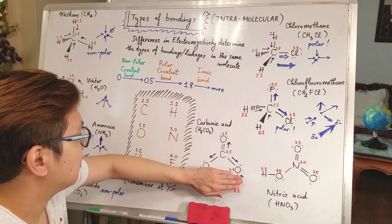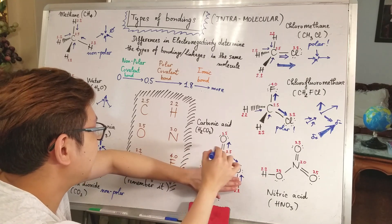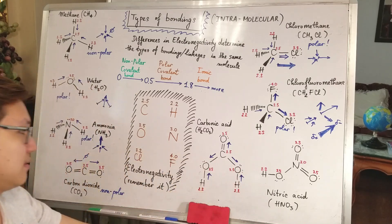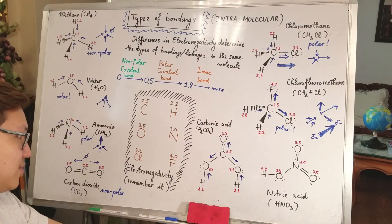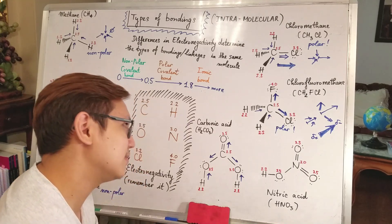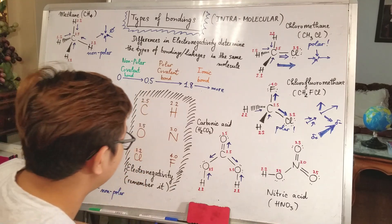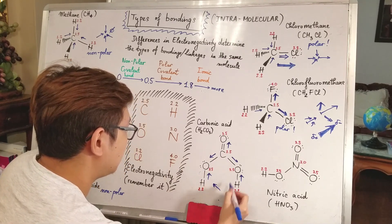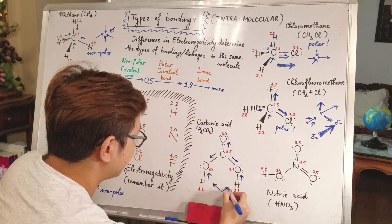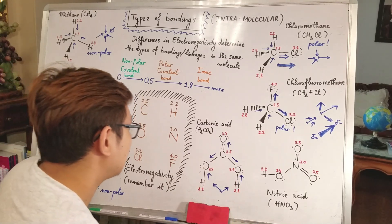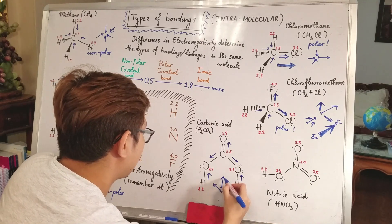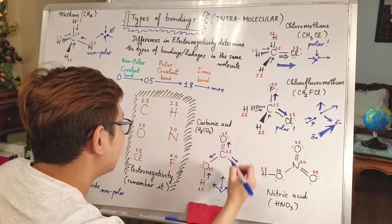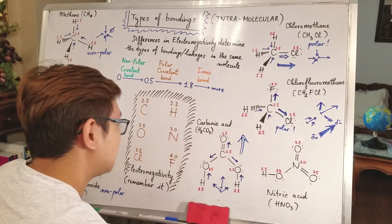For the next example: if you ignore the hydrogens, the molecule might look like the bond vectors could cancel each other out. But with the hydrogens present, that cancellation doesn't happen. Two of the bonds contribute a vector sum in one direction and two others in another direction — these two vector sums then combine, and because of the hydrogen contributions they don't cancel. So this molecule is definitely polar.